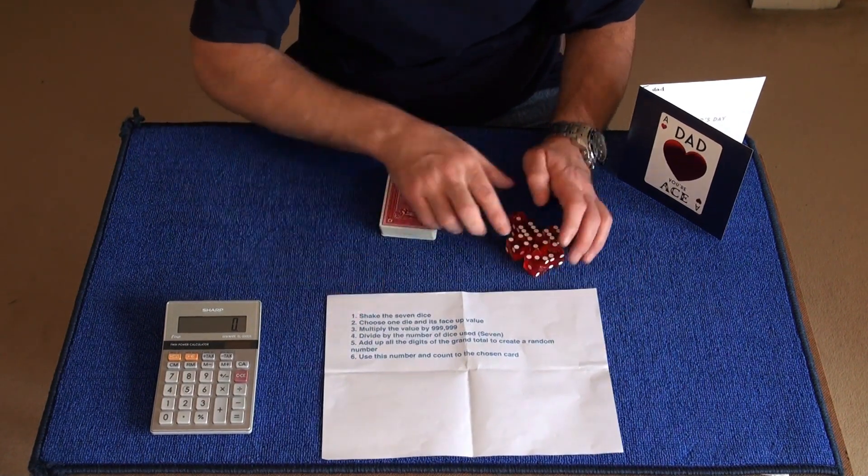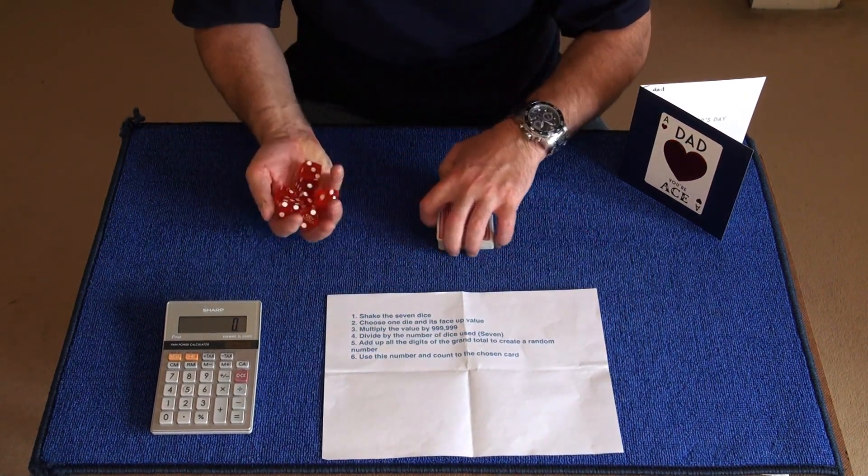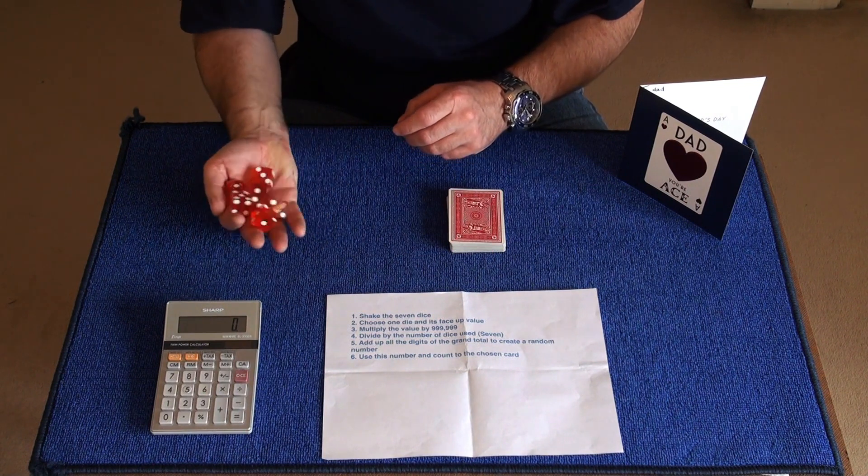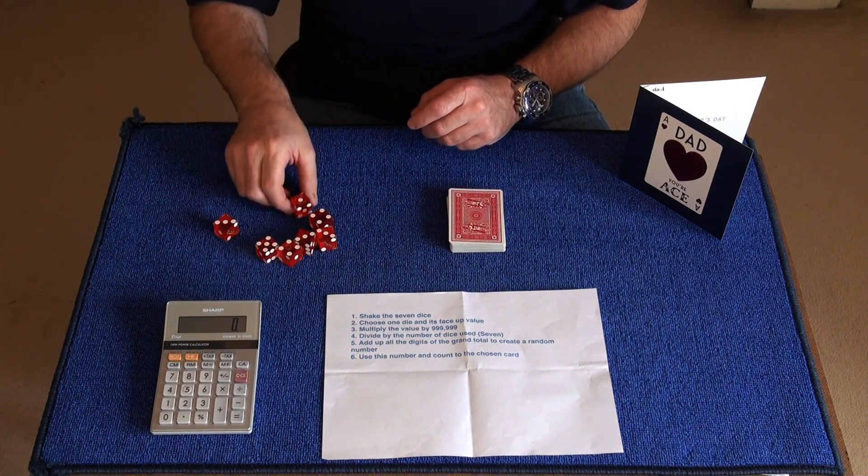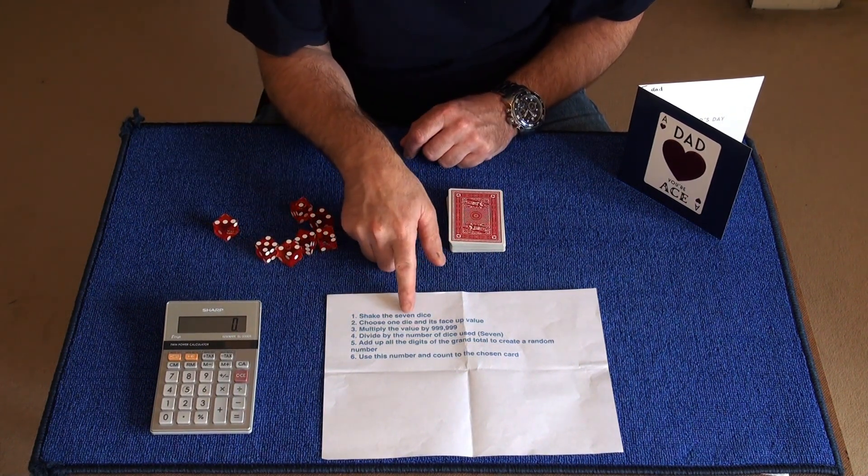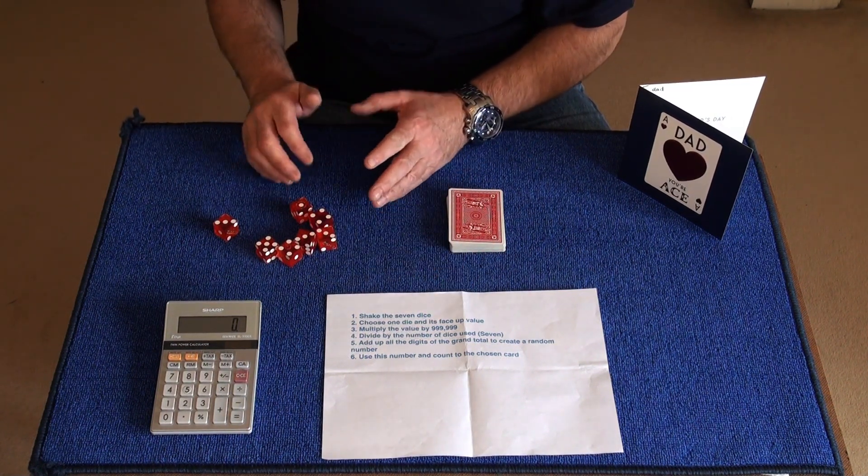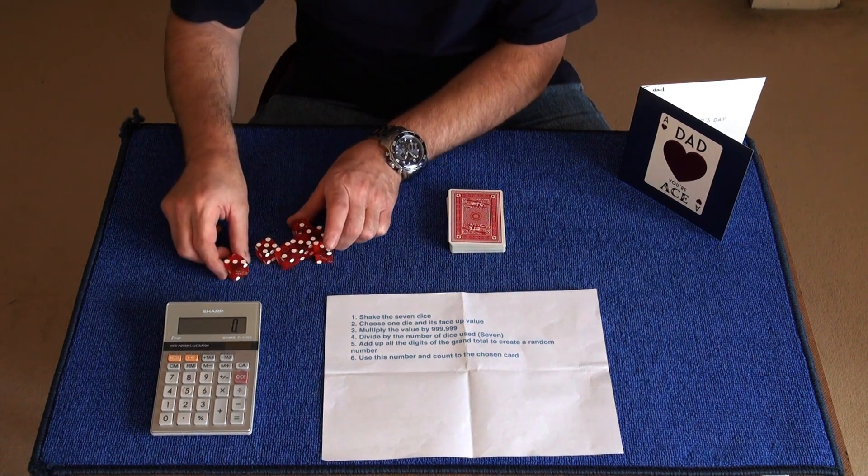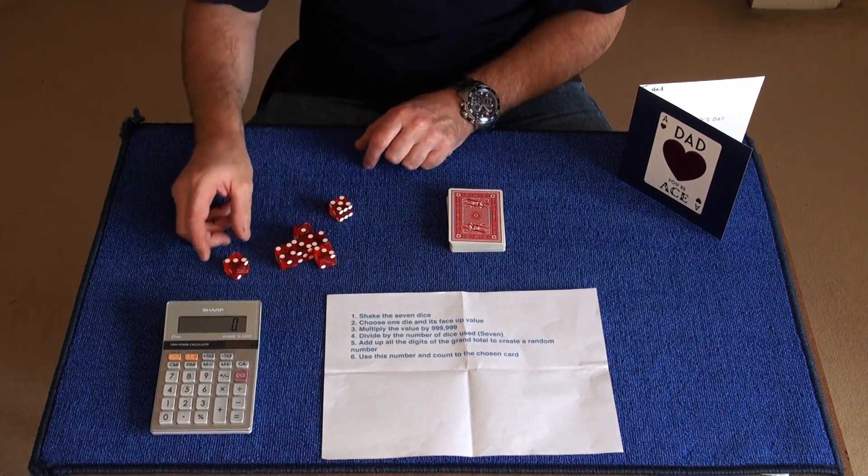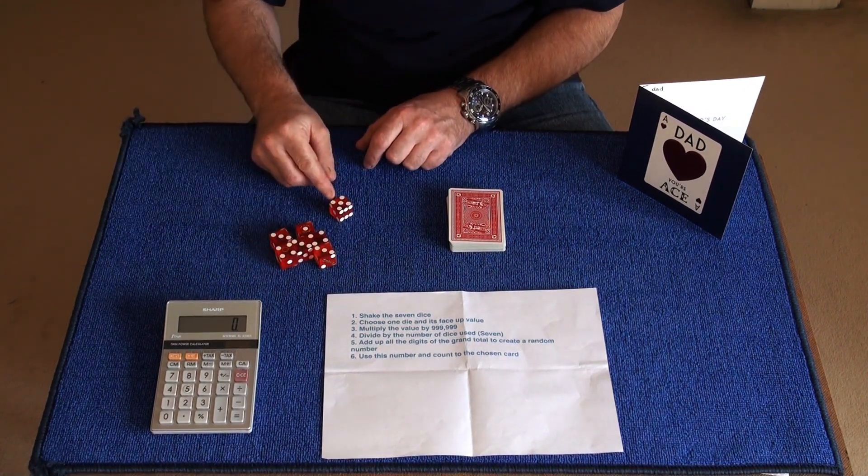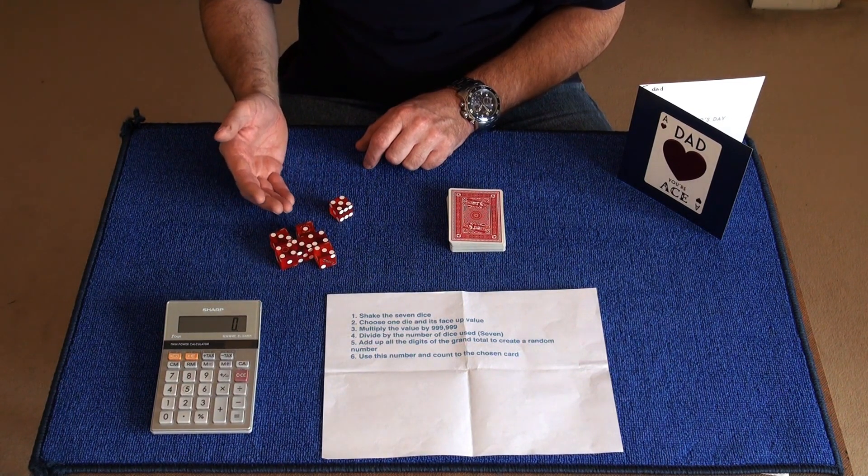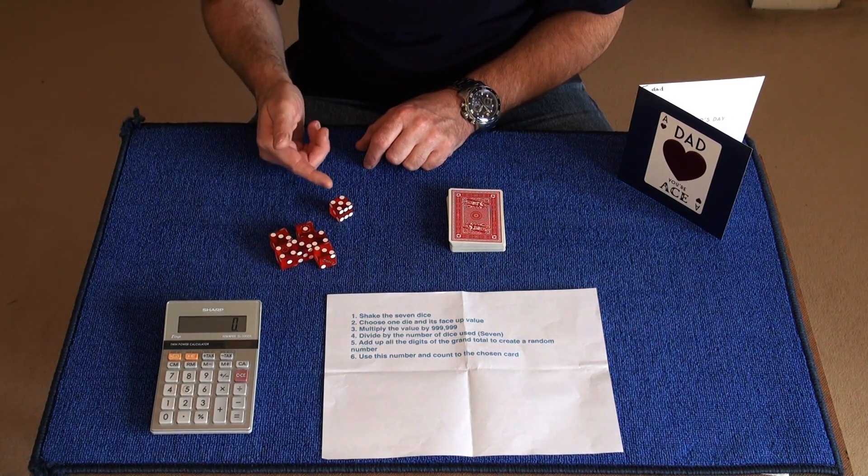It says step one: shake the seven dice. So you shake the seven dice onto the table. And then it says choose one of the dice and its face value. So I'll choose any one of the dice. I'll either choose this number five here. Now just in case you think I've chosen this for any particular reason, I will shake it again to get a random number.